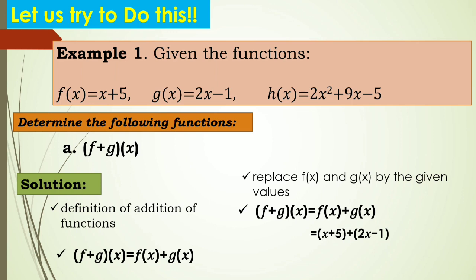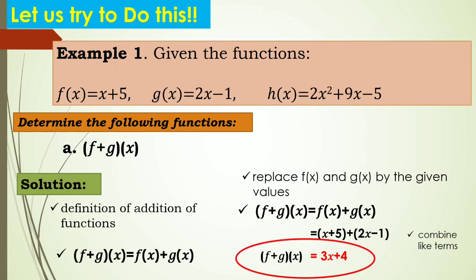Replace the values: f of x becomes x plus 5, plus g of x which is 2x minus 1. You need to combine like terms. We have x and 2x; add them to get 3x. And 5 minus 1 equals 4. Therefore, f plus g of x equals 3x plus 4. This is your final answer for letter A.